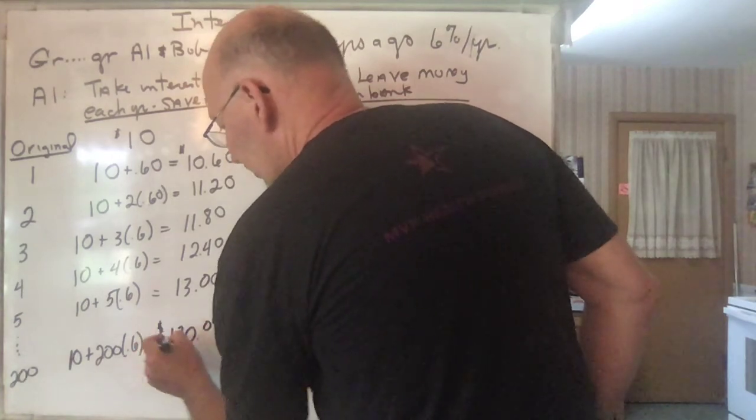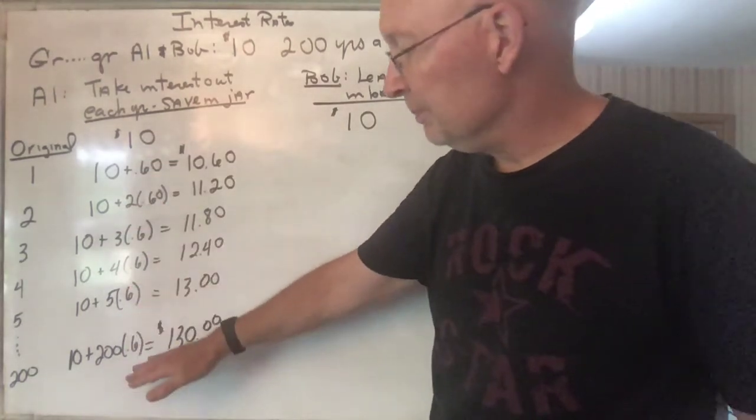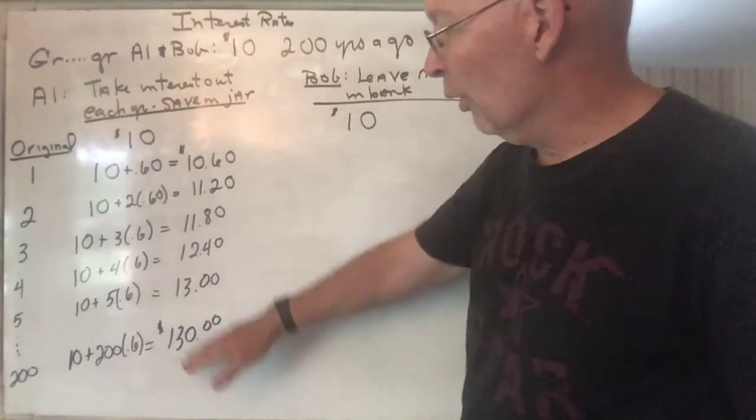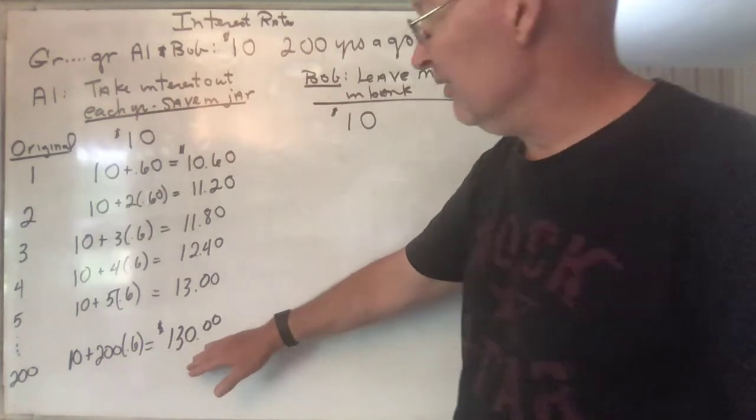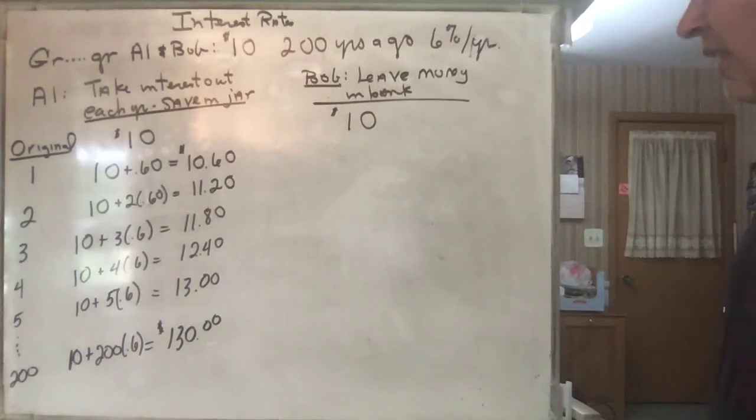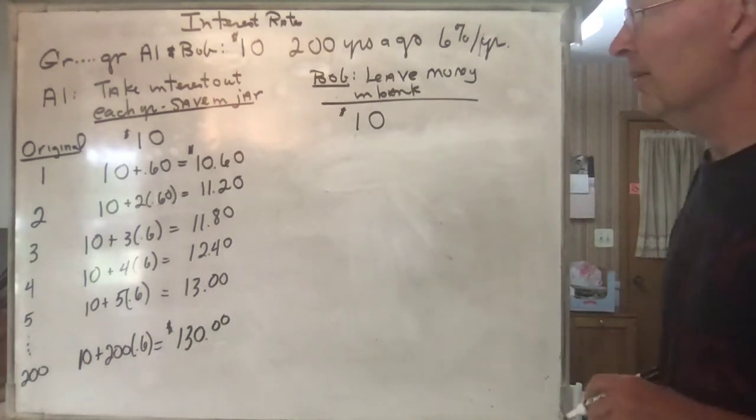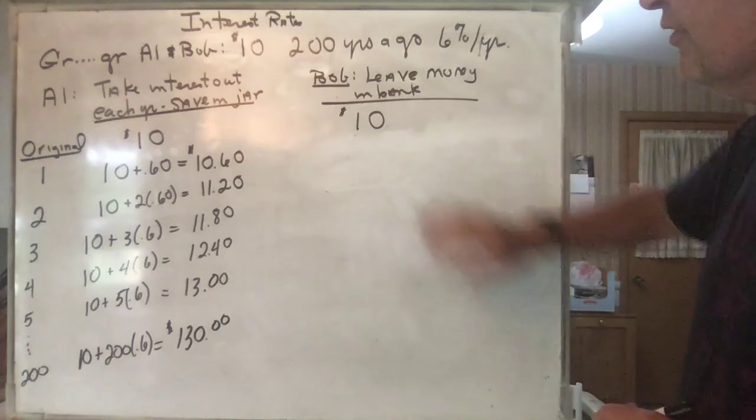Okay, and zero cents. So 200 years ago, collecting 60 cents a year, that's growing up to $130. That's kind of nice. I'd like to have $130 if someone gave it to me. Okay, let's see what happens now with Bob.